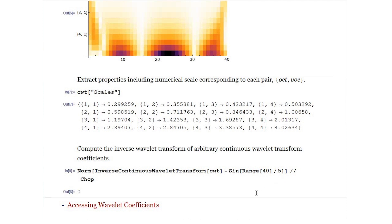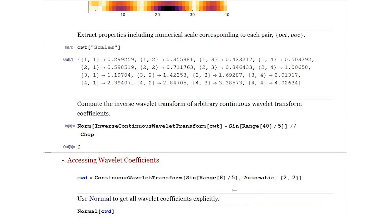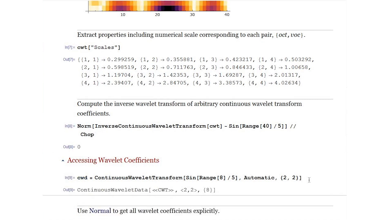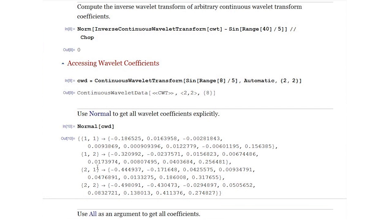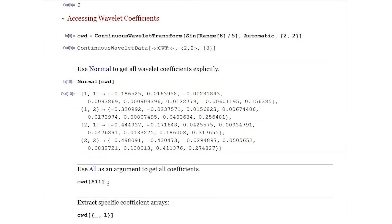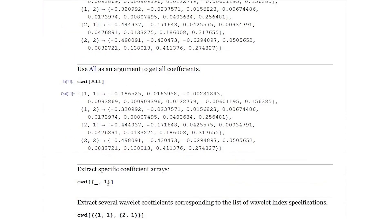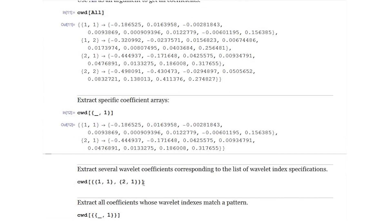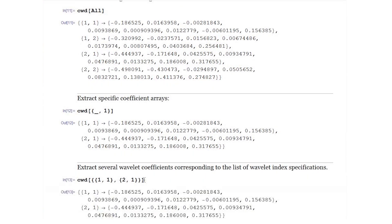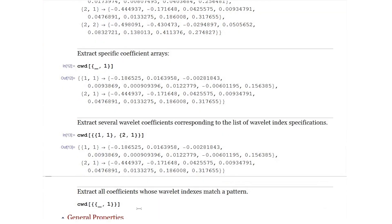You can access many properties from the continuous wavelet transform, including the wavelet coefficients — the coarse and detail coefficients that come from the transformation. Using the 'Normal' property, we can access coefficients at different octaves and voices. You can use an 'All' argument to get similar results, extract specific coefficients using a pattern — for example, all coefficients ending with 1 — or explicitly specify an octave and voice pair, or extract all coefficients matching a certain pattern.